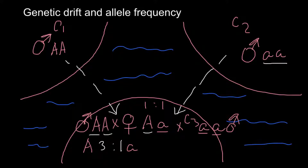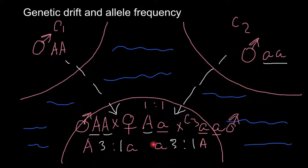In this second scenario we would have three recessive alleles and one dominant allele, so the ratio would again be three to one — but this time three would be recessive alleles and one would be dominant. As you can see, this is how genetic drift might influence the balance between alleles, shifting from a one-to-one ratio to a three-to-one ratio.